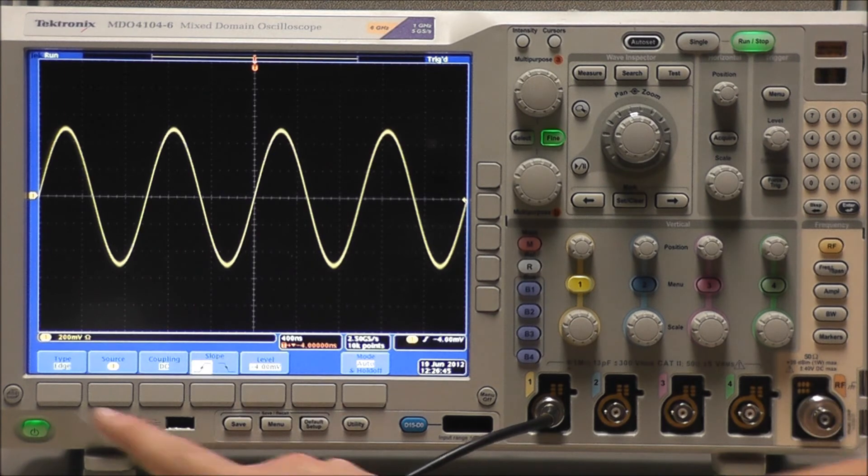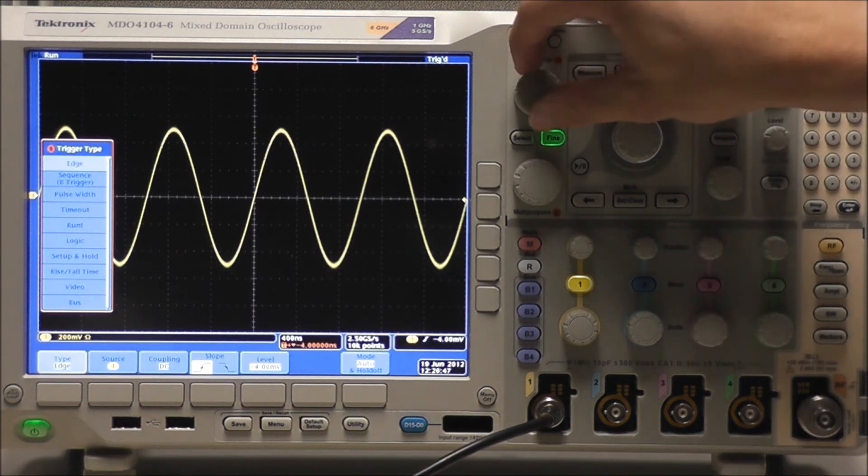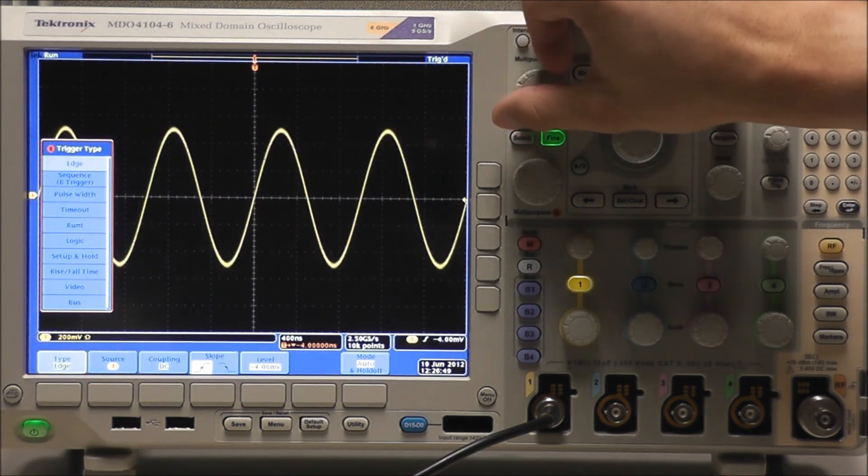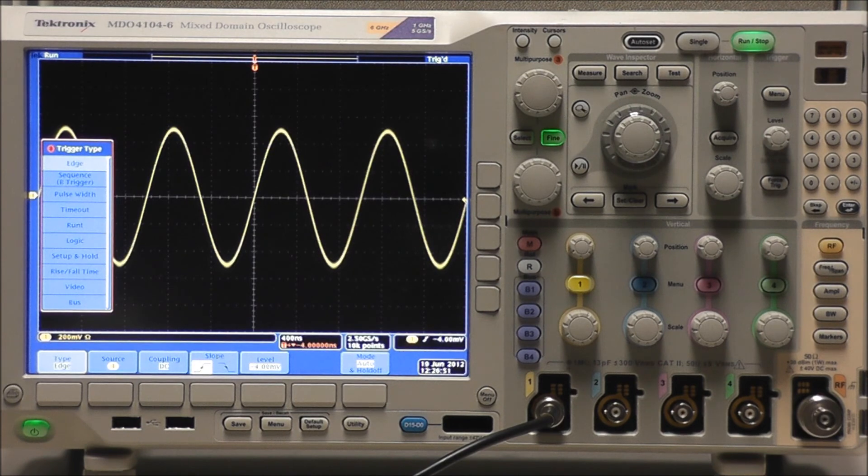So if we select our Trigger Menu followed by Trigger Type, we can use Multipurpose A to select our trigger type, and you can see we have a wide array of options to choose from.